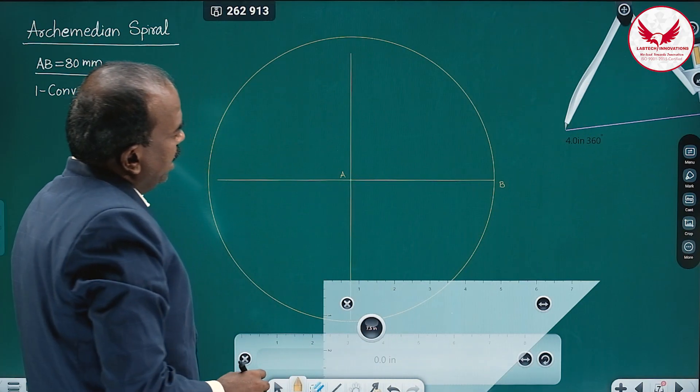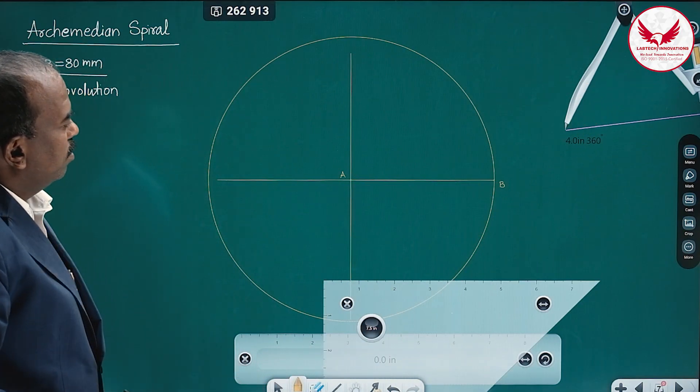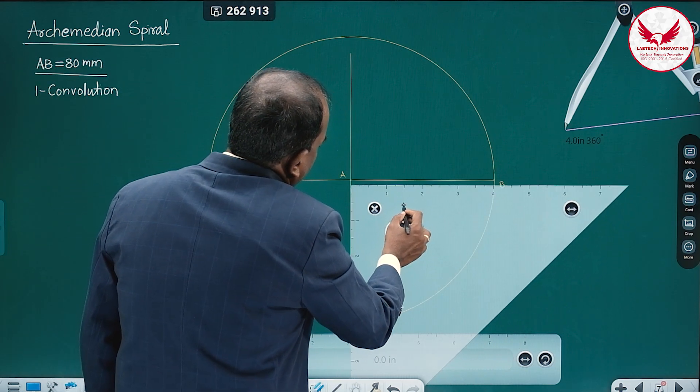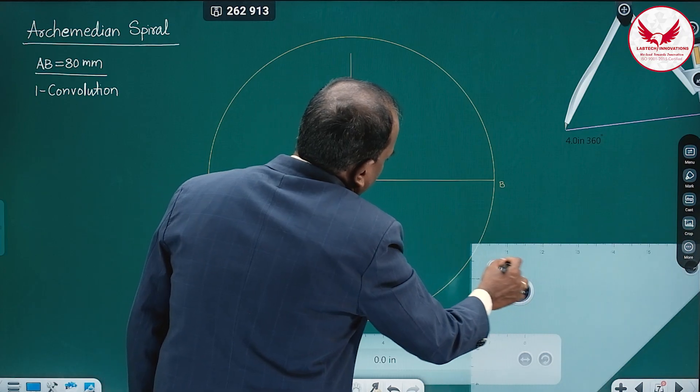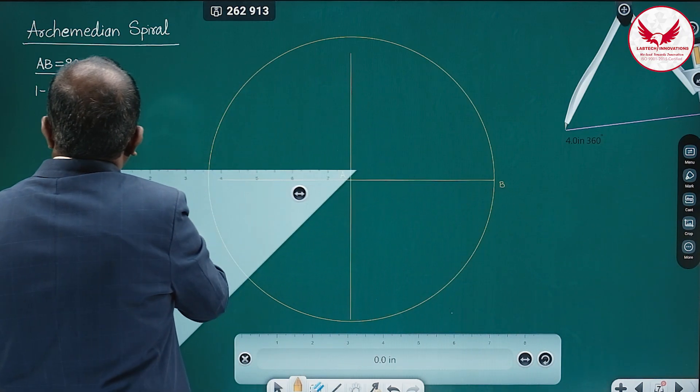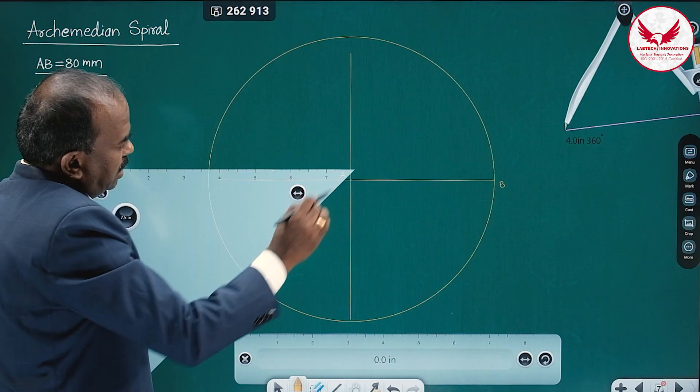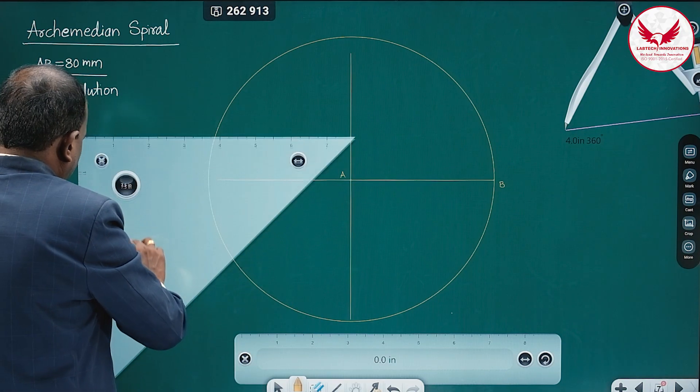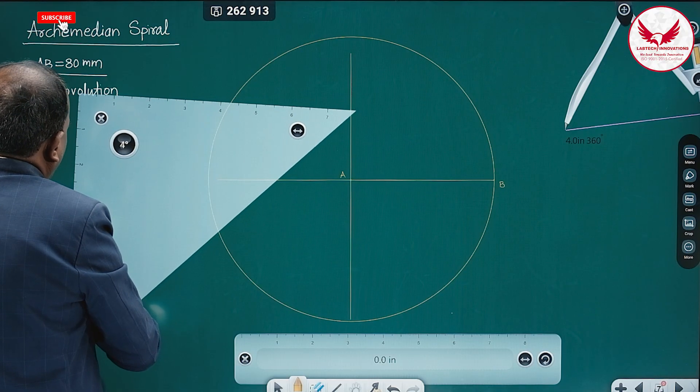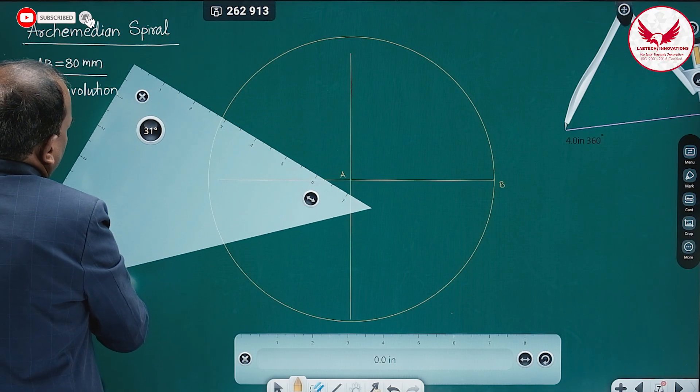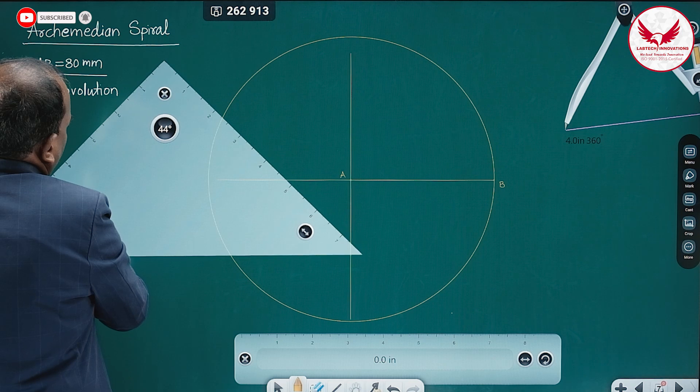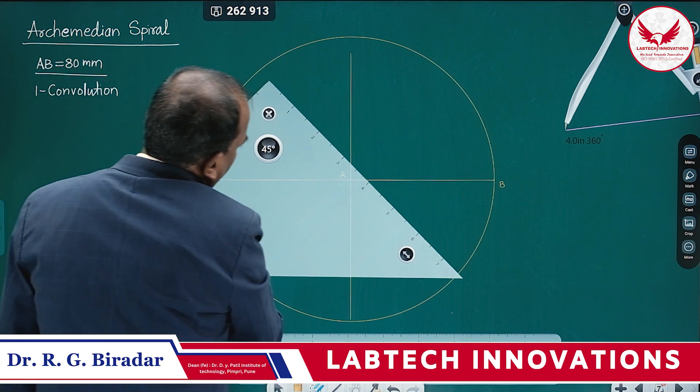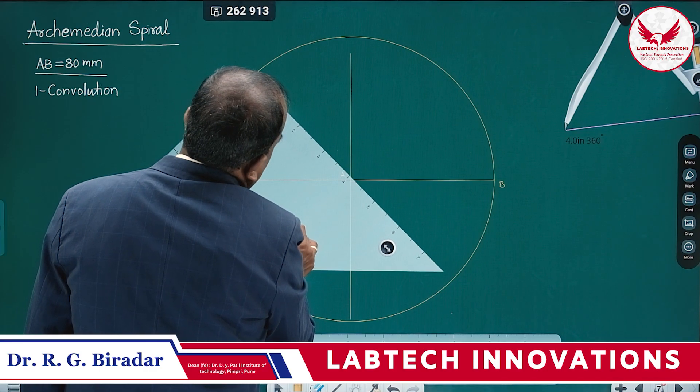And for getting the Archimedean spiral, first we have to divide this circle into eight equal parts. At the same time, this AB distance also in same number of parts. For division of circle into eight equal parts, if I draw two lines at an angle of 45 degrees, this circle will be divided into eight equal parts.